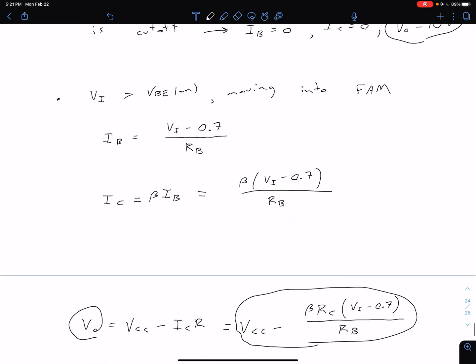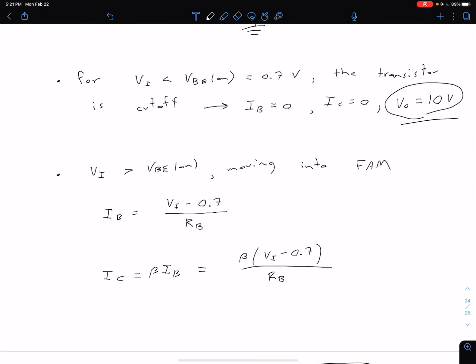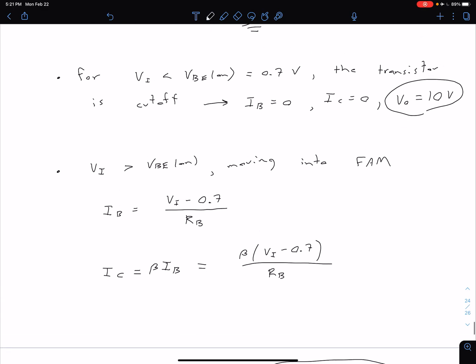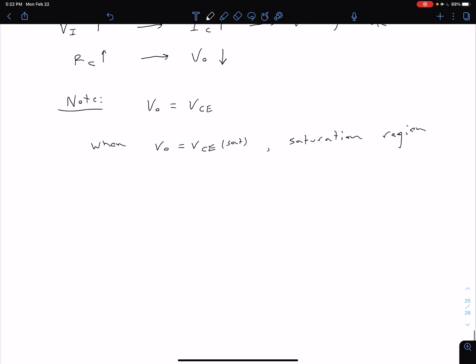We can see when we're in cutoff we're at 10 volts, we move into forward active we're going to be decreasing from 10 volts until eventually we get down to typical values of 0.1 to 0.3 and then we're going to be in saturation region. Let's figure out what that exact transition point for our input voltage is where we go into saturation.